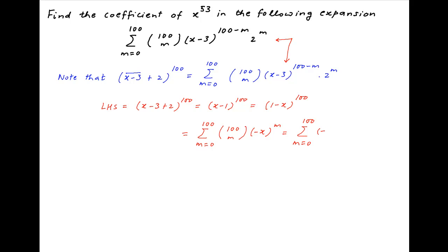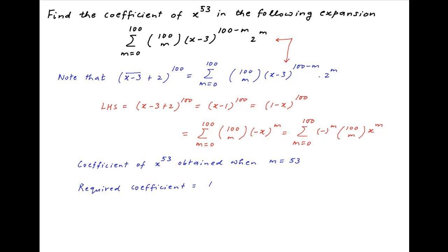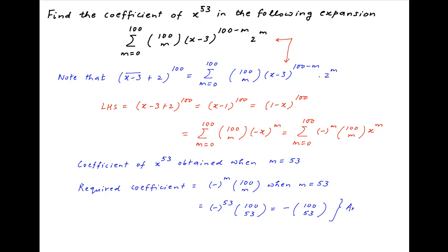This is equal to the summation, m going from 0 to 100, of (-1)^m times 100 choose m times x^m. The coefficient of x^53 is obtained by setting m = 53, giving (-1)^53 times 100 choose 53, which equals -100 choose 53. This is the required coefficient of x^53 in the given expression.